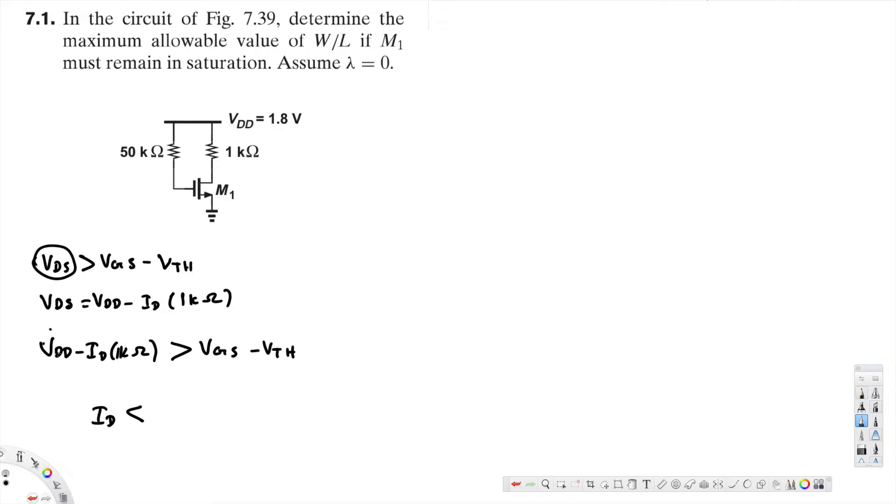If I keep ID on this side, this ID is negative, and if I divide by negative, the sign will flip around. That's how we got less than. And then VDD plus V threshold minus VGS divided by 1 kilo ohm. We have VDD that is 1.8, V threshold is 0.4 most of the time, and VGS is also 1.8. So let's go ahead and plug it in the equation.